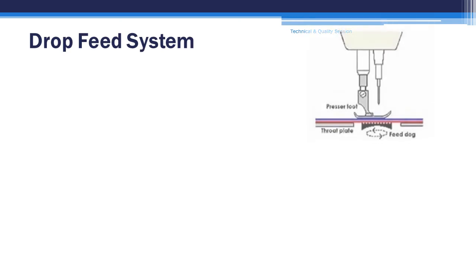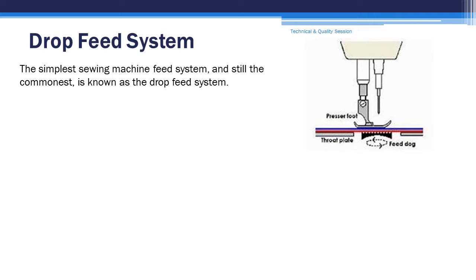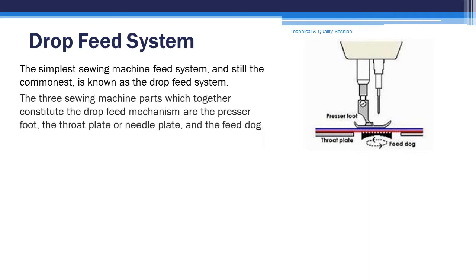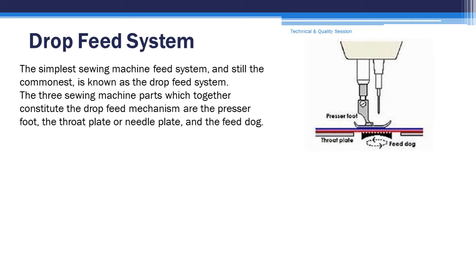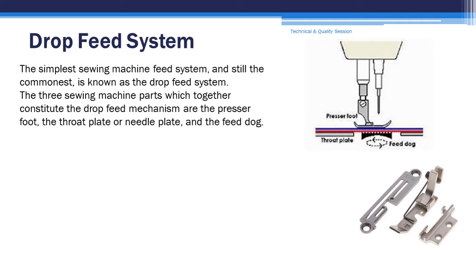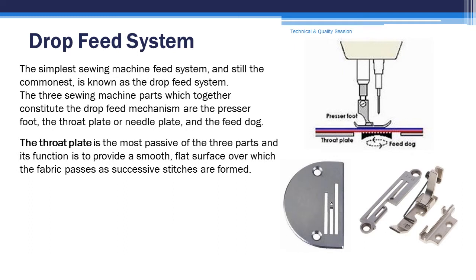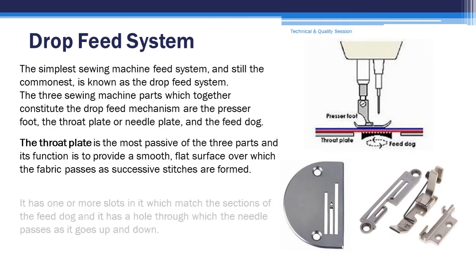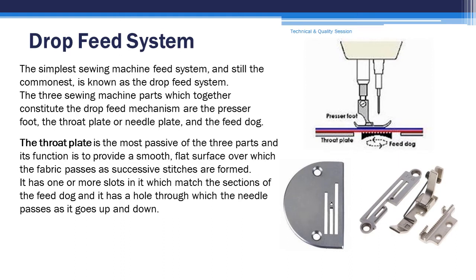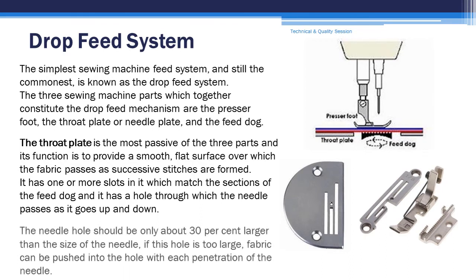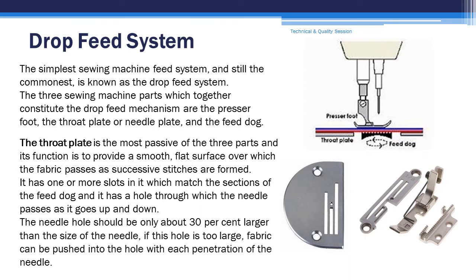Drop feed system. The simplest sewing machine feed system, and still the commonest, is known as the drop feed system. The three sewing machine parts which together constitute the drop feed mechanism are the presser foot, the throat plate or needle plate, and the feed dog. The throat plate is the most passive of the three parts and its function is to provide a smooth flat surface over which the fabric passes as successive stitches are formed. It has one or more slots which match the section of the feed dog, and it has a hole through which the needle passes as it goes up and down. The needle hole should be only about 30% larger than the size of the needle. If this hole is too large, fabric can be pushed into the hole with each penetration of the needle.